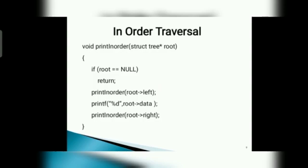In-order traversal program: void print_inorder, struct tree star root. If root equals equals null, return. Print_inorder root pointer left. Printf percentage d, root pointer data. Print_inorder root pointer right.